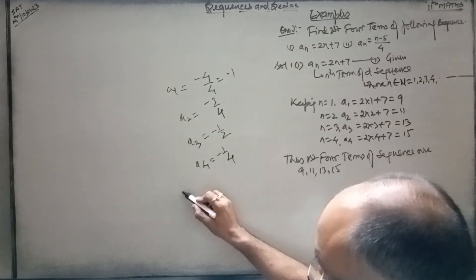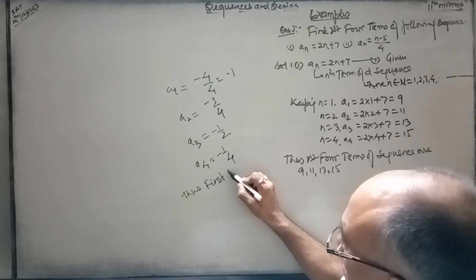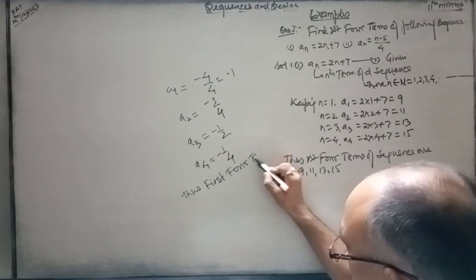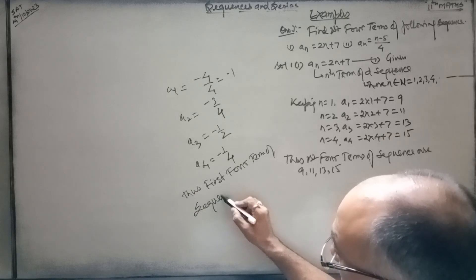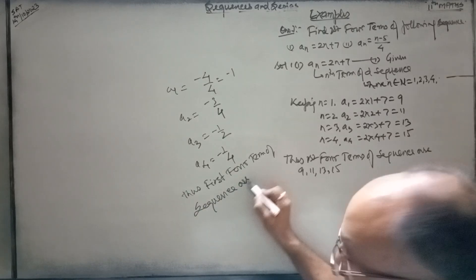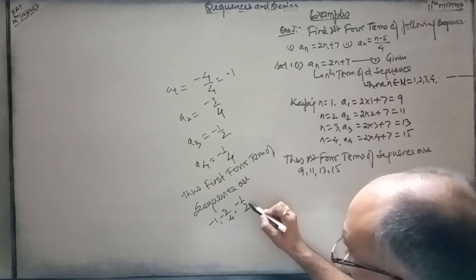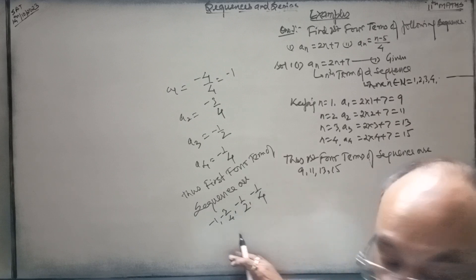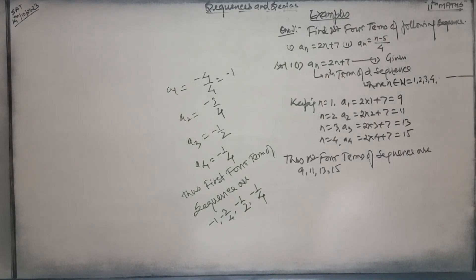And a4 is equal to minus 1 by 4. Thus, the first four terms of the sequence are minus 1, minus 3 by 4, minus 1 by 2, minus 1 by 4. A particular order is here in consecutive terms, then this sequence is here.